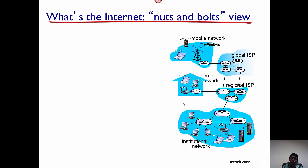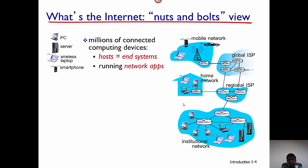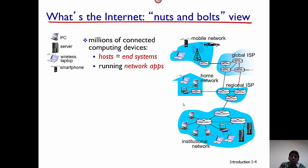There are two main views of the internet. The first one is the nuts and bolts view. In the nuts and bolts view, we consider the internet as a machine and look at the different aspects that make it up. The first thing in the internet are the millions of hosts or devices that are connected to it. For example, your laptop, your PC, the server, and the phone that you have are all end hosts. They all connect to the internet, and all these hosts are running different applications.